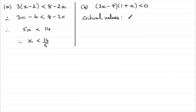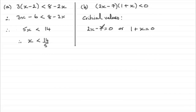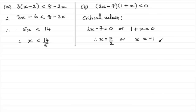So it's where this would equal 0 — that's when 2x minus 7 equals 0, or 1 plus x equals 0. If we add 7 to both sides and then divide by 2, you'll get 2x equals 7, leading to x equals 7 over 2, or 3 and a half. And for this one, if we subtract 1 from both sides, we've got x equals minus 1. These are our critical values.